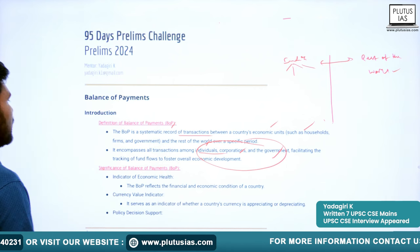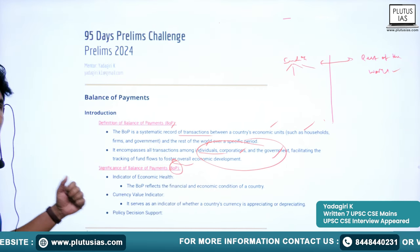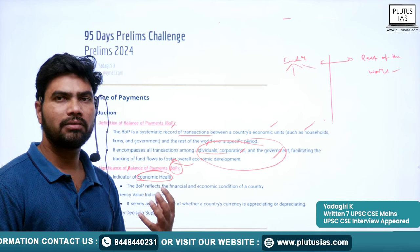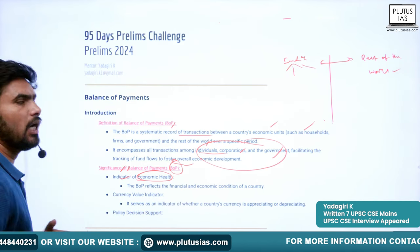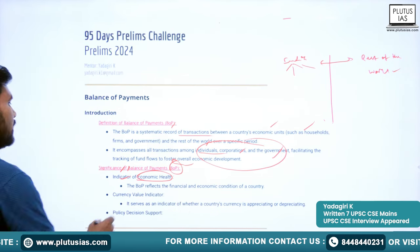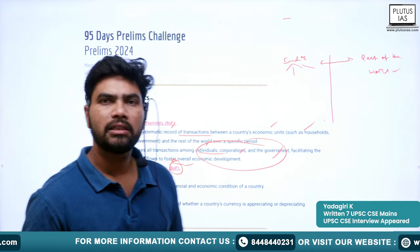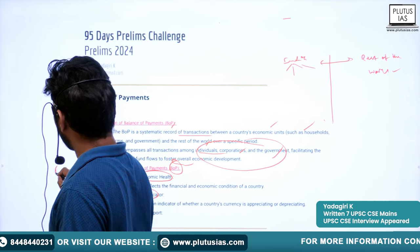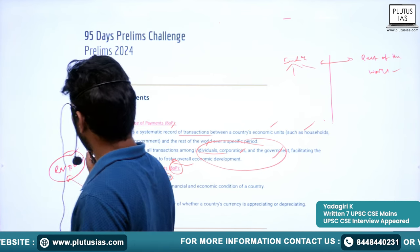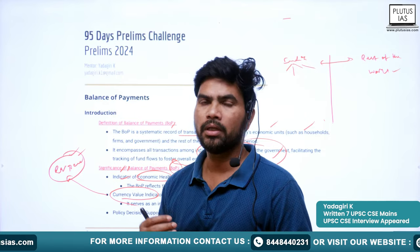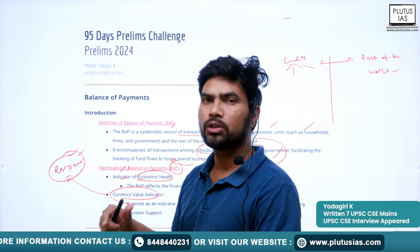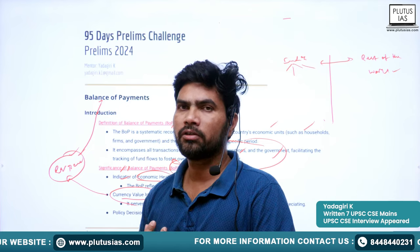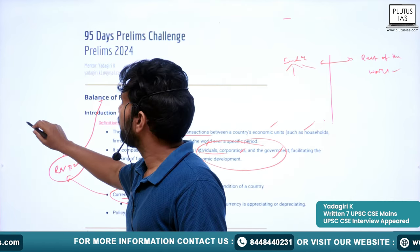The significance of balance of payments: it gives the health of the economy and is a good indicator of the actual economic performance of a country. Next is currency value indicator — based on whether the balance of payments is in surplus or deficit, the value of a country's currency will be decided. For example, the value of the rupee will be decided based on the balance of payments situation. If a country has a surplus, the value of that country's currency tends to be higher.